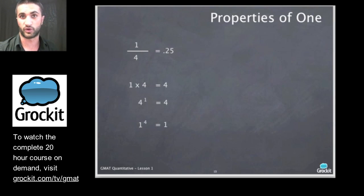One to the four is one, because one times one times one times one is still one. We can divide by one all we want. We can't divide by zero, but we can divide by one. And we get the number that we are dividing with.